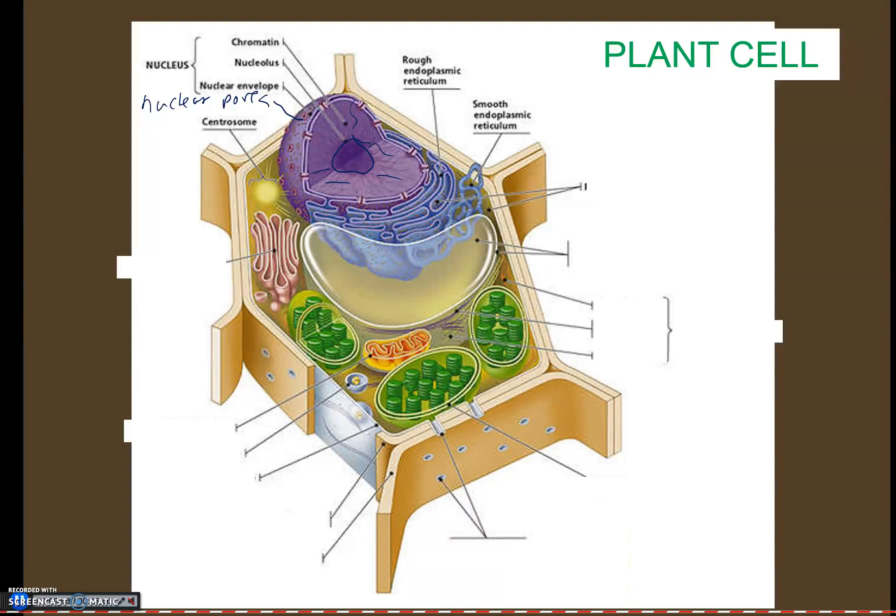Again, we're going to have rough and smooth endoplasmic reticulum. So we can still abbreviate this rough ER and smooth ER. Again, rough endoplasmic reticulum has ribosomes. Smooth endoplasmic reticulum does not. It's the highly folded membrane that attaches from the nuclear envelope to the outer membrane of the cell. Again, just like in the animal cell, we have the Golgi. Now here it's labeled as Golgi apparatus. And remember, it can be Golgi apparatus, Golgi body, Golgi complex, or again, the Golgi. But it's all the same thing. It's a series of flattened, closely stacked membrane sacks that's used to package up newly made proteins and fats.